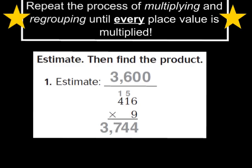As we begin to multiply by one-digit numbers in this lesson, there's a concept that I want you to understand. That concept is that you are to repeat the process of multiplying and regrouping until every place value is multiplied. So we're going to start out by taking a look at question number one.